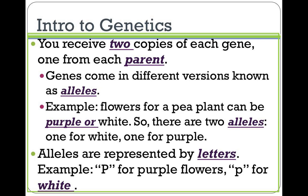the person who invented genetics, studied pea plants. So for this example, flowers for a pea plant can be purple or white. That means the two alleles for a pea plant are one white allele and one purple allele. Allele is just the name for that version. Alleles are represented by letters — so we have a capital P for purple flowers, and a lowercase p for white flowers.